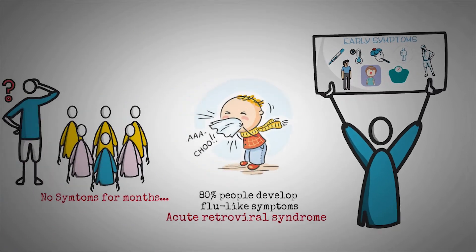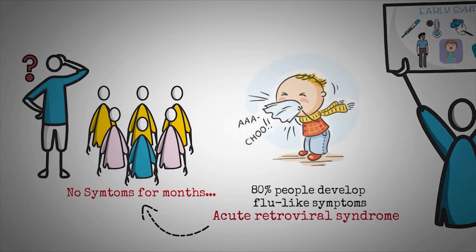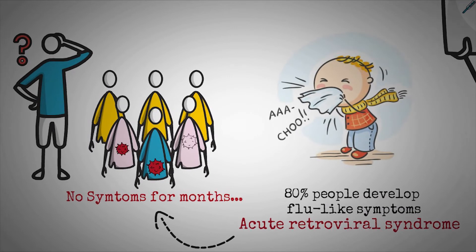After the symptoms of acute retroviral syndrome resolve, many people go on to experience no HIV symptoms for years. While they feel well and appear healthy, the virus continues to develop and damage the immune system and organs. This slow process can continue for around 8–10 years.